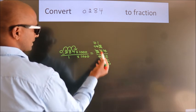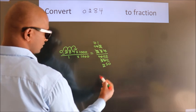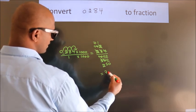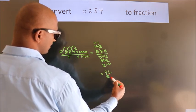Further cannot be simplified. So, our fraction is 71 by 250.